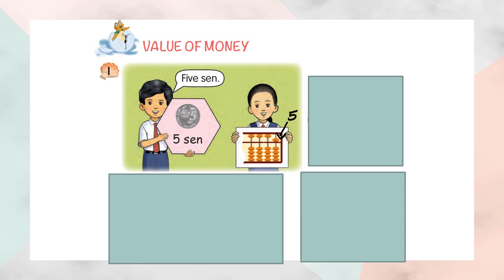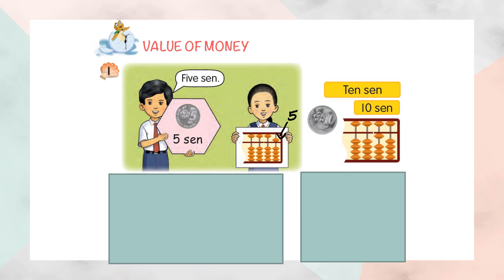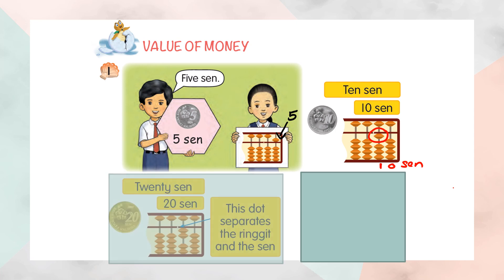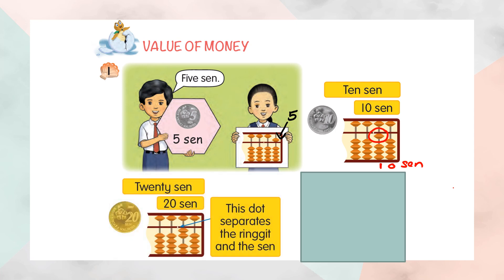This abacus shows five cent. How about ten cent? Ten cent is here. This is ten cent. This is zero and this is one, so this is ten. Ten cent.